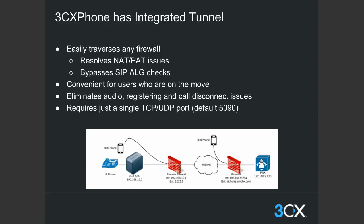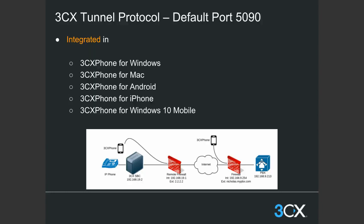The tunnel will also eliminate one-way audio, registration, and call disconnect issues. If you experience any of these issues, switch on the tunnel, make sure you use the tunnel, and make sure your port is forwarded on the firewall. It just requires a single TCP/UDP port — UDP port 5090 by default on the standalone installation. The 3CX tunnel with default port 5090 is integrated into 3CX phone for Windows, Mac, Android, iPhone, and Windows 10 Mobile. All clients have the option to use the tunnel, and it is strongly recommended that you do so.